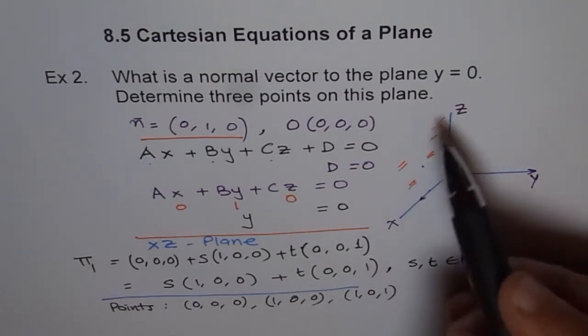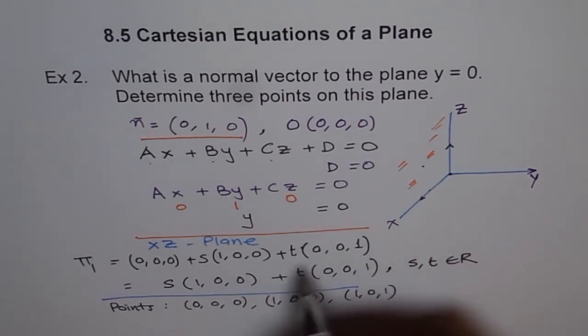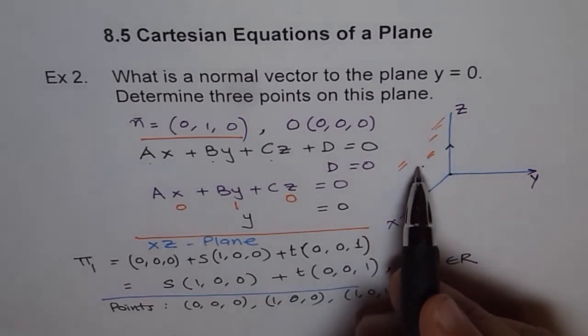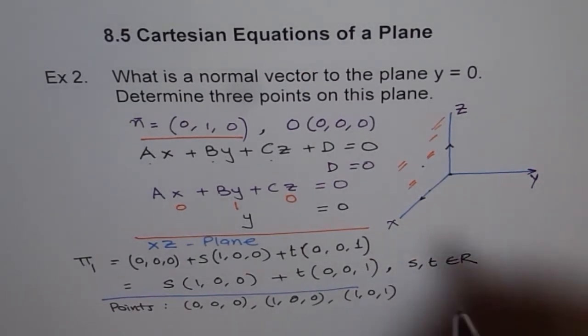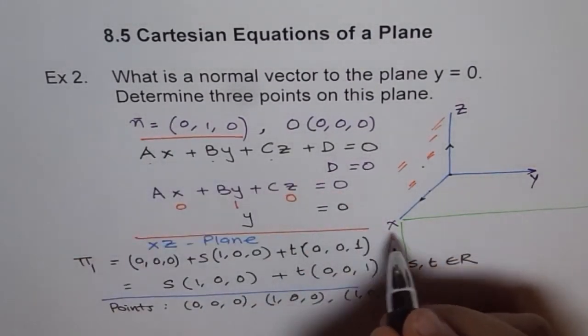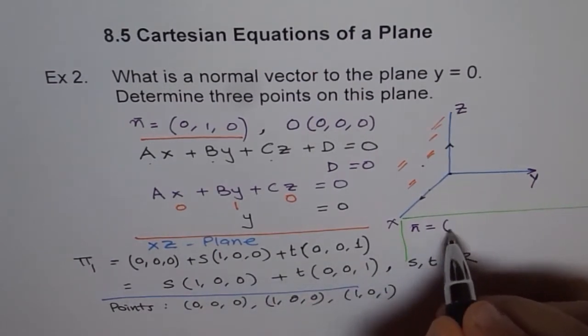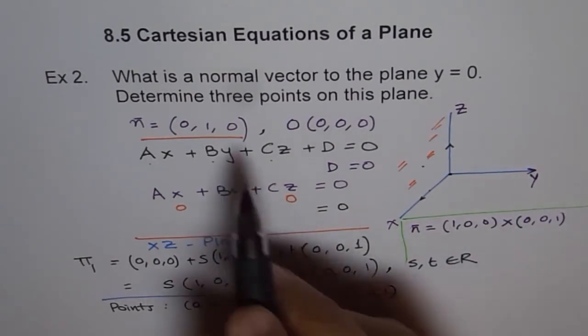So y equals 0 is the standard. And how do we get y equals 0 from these two? This is the vector equation. To get the normal, what are you going to do? Do cross multiply of these two vectors. So if you do cross product of (1, 0, 0) and (0, 0, 1), you will get normal to this plane. And the normal will be y. So I am leaving that as an exercise for you. This normal should be equal to the cross product of (1, 0, 0) and (0, 0, 1). Once you do that, you should get your normal.